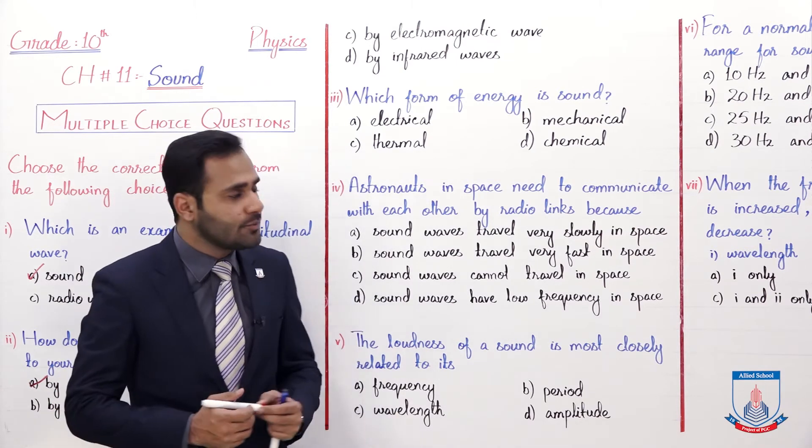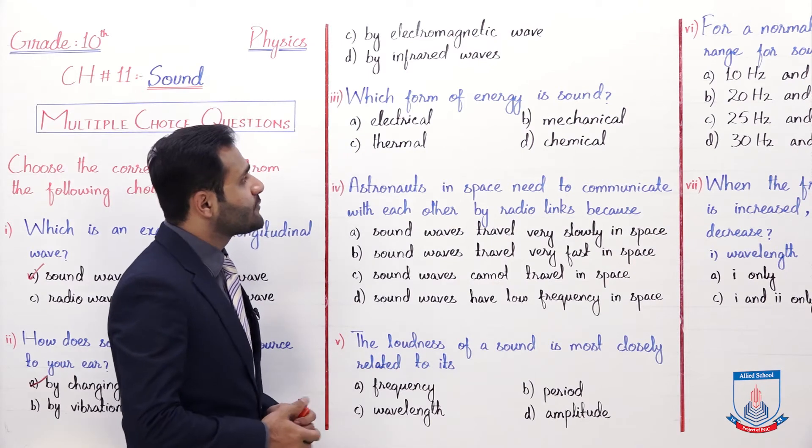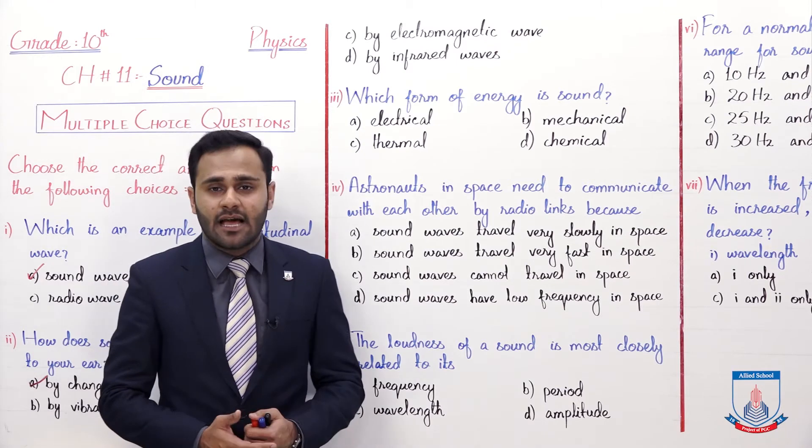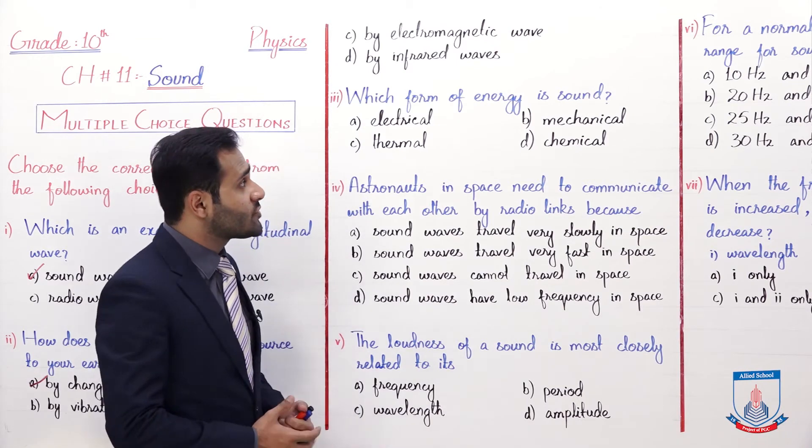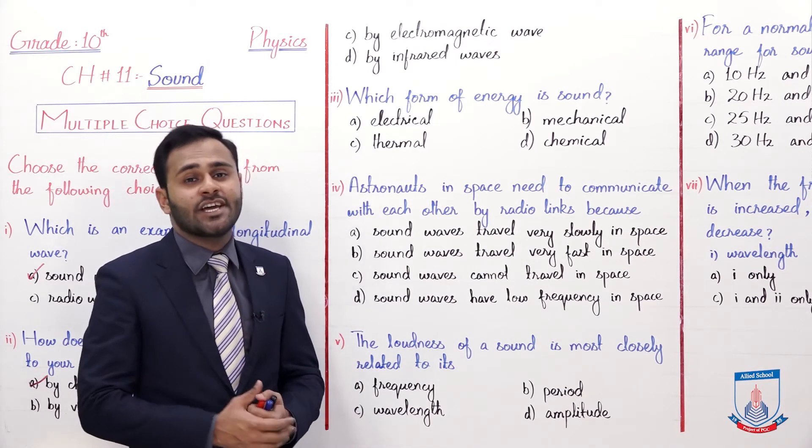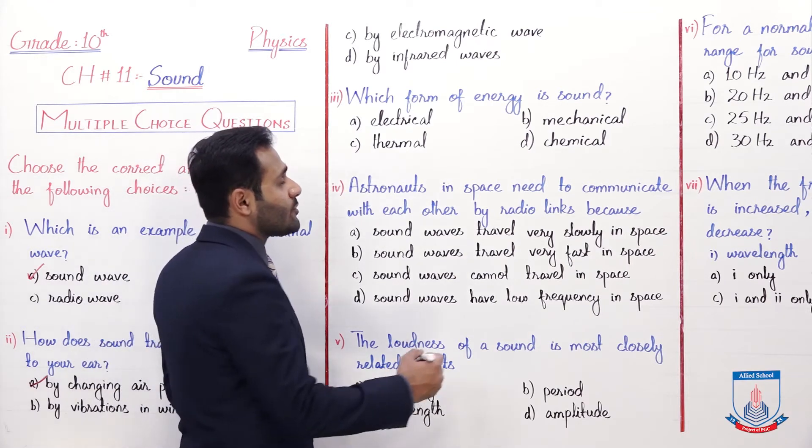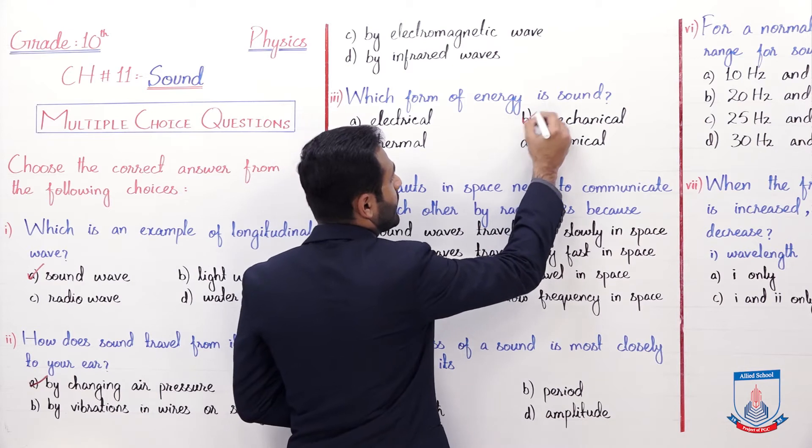And the next MCQ three which form of energy is sound? A electrical, B mechanical, C thermal and D chemical. So the form of energy of sound energy is mechanical energy. So mechanical energy, that is sound energy.